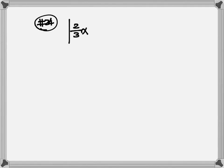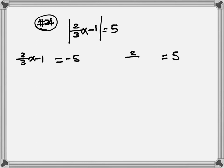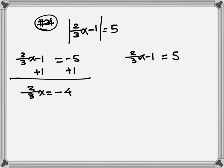Number 24: absolute value of two-thirds x minus 1 equals 5. Step one: separate into two equations. Equation on the left equals negative 5; equation on the right equals positive 5. Left equation: plus 1 on both sides gives two-thirds x equals negative 4. Multiply by 3 to clear the denominator: 2x equals negative 12. Divide by 2: x equals negative 6.